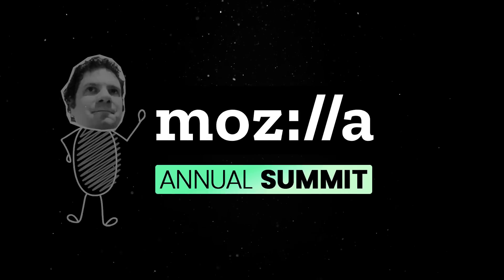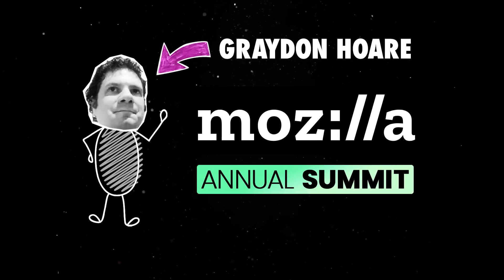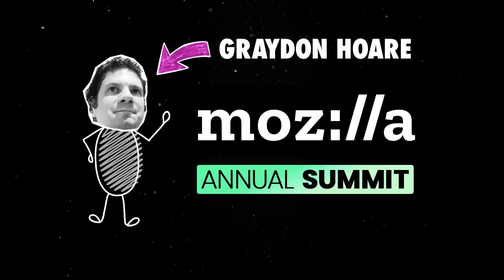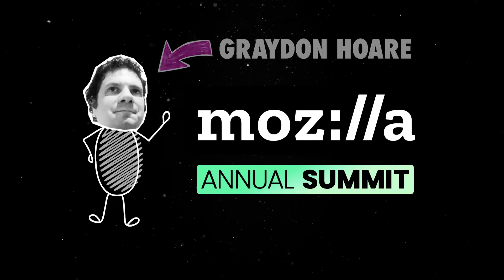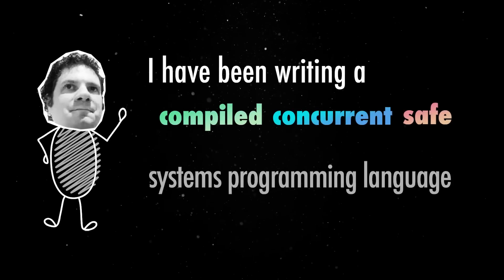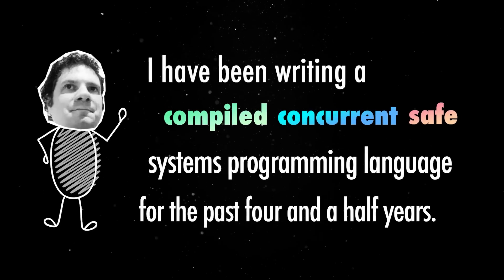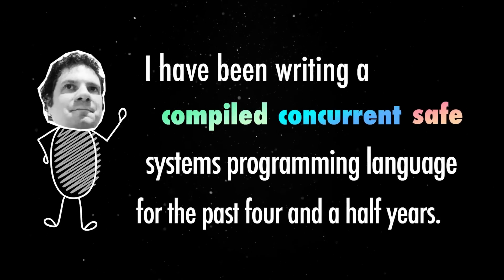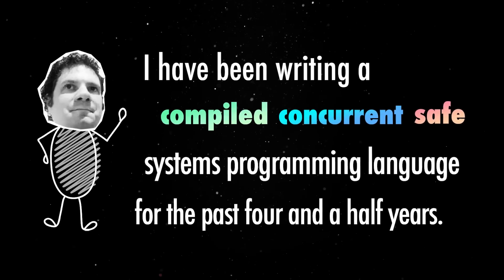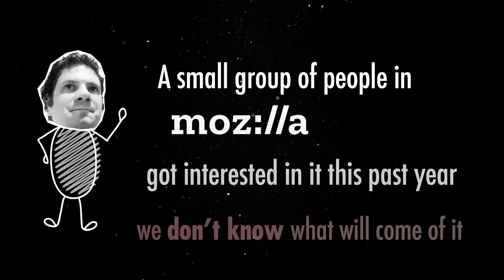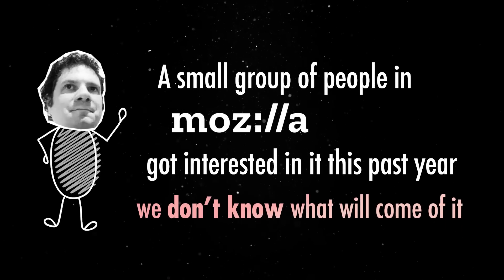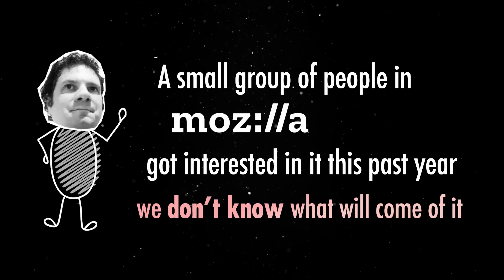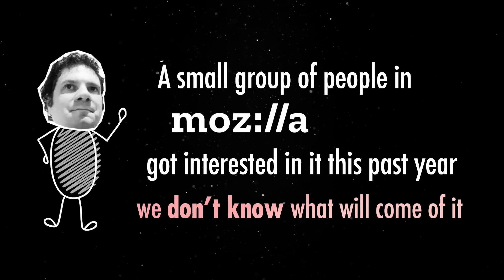In July 2010, at the Mozilla Annual Summit, Graydon Hoare casually started his PowerPoint presentation stating the following: 'I have been writing a compiled, concurrent safe systems programming language for the past 4 and a half years. A small group of people in Mozilla got interested in it this past year and we do not know exactly what will come of it.'